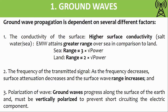The losses due to attenuation by the earth's surface are greater over land than over sea, because the sea has good electrical conductivity. Hence, greater ranges are attainable over the sea.